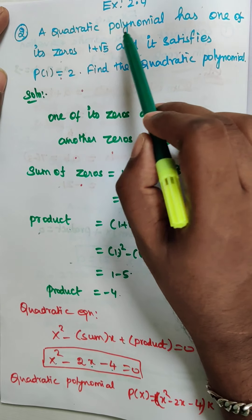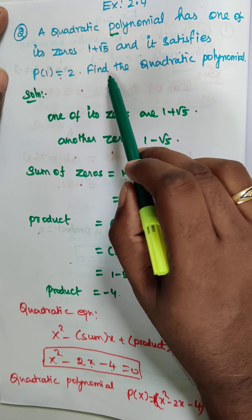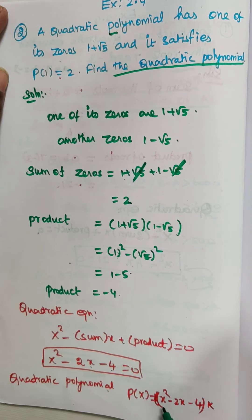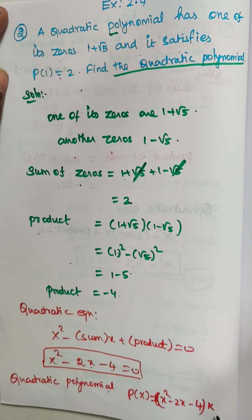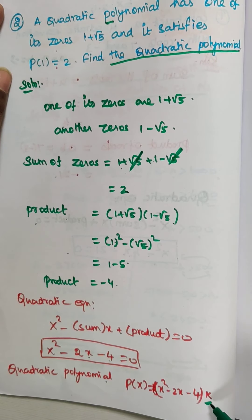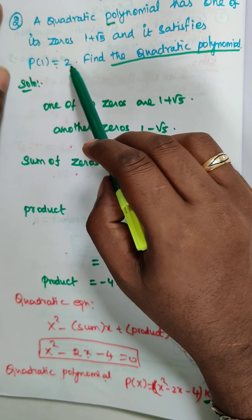The question asks for a quadratic polynomial. So the quadratic polynomial P of x is equal to k into x square minus 2x minus 4, where k is a constant we need to find. The given condition is p of 1 is equal to 2.